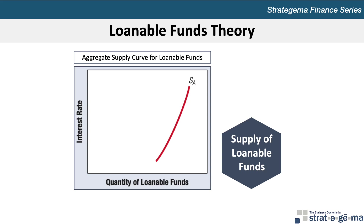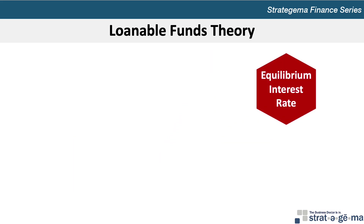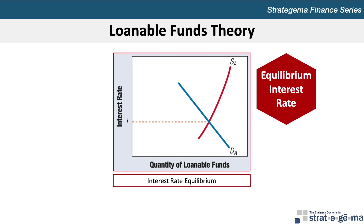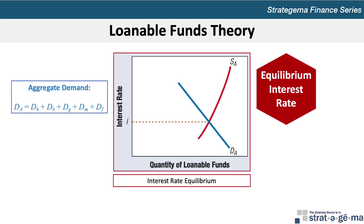An understanding of equilibrium interest rates is necessary to assess how various events can affect interest rates. The equilibrium interest rate is the rate that equates the aggregate demand for funds with the aggregate supply of loanable funds. The aggregate demand for funds, DA, can be written as household demand, DH, plus business demand, DB, plus federal government demand, DG, plus municipal demand, DM, plus foreign demand, DF.